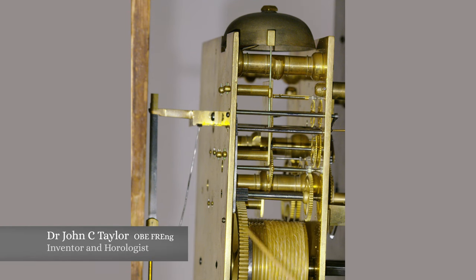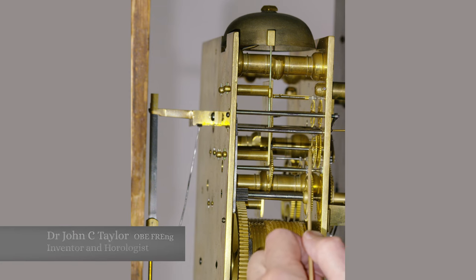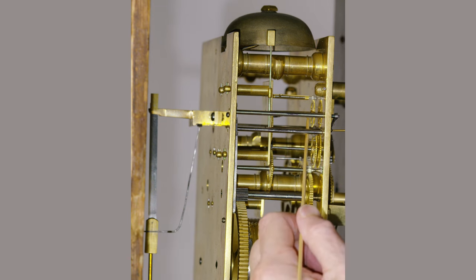Here we've got the great wheel, the second wheel, the third wheel, the fourth wheel, the fifth wheel and the sixth wheel. So it's a six-wheel train which strikes for a year.